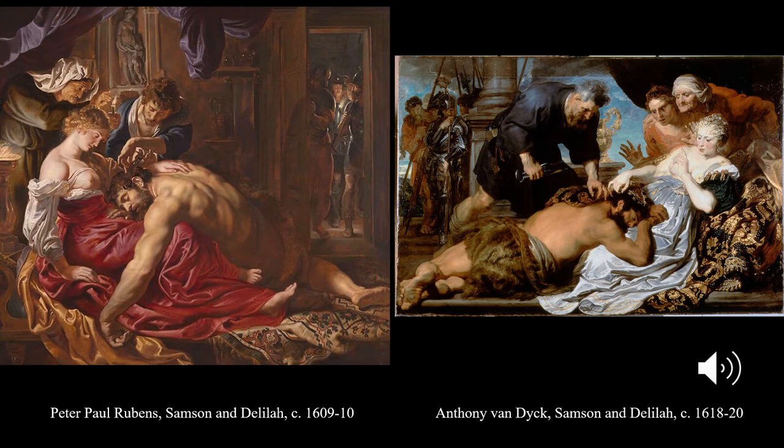Van Dyck gives us an image outdoors with a peak of dramatic blue sky and shows a fleeting moment indicated by gestures and glances of the figures — and these qualities will be carried into his portraiture. As a painter of religious pictures and mythological scenes, Rubens had a much broader impact in art history. But as a portraitist, particularly in England, Van Dyck was far more influential.